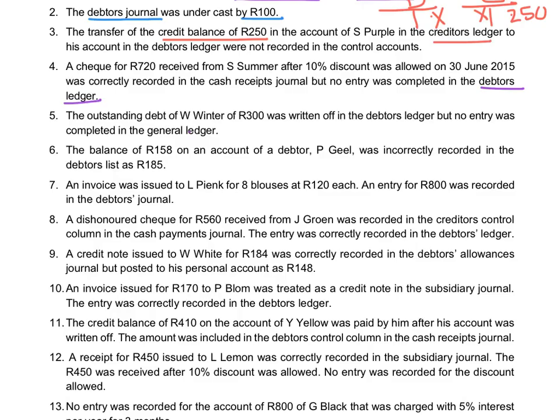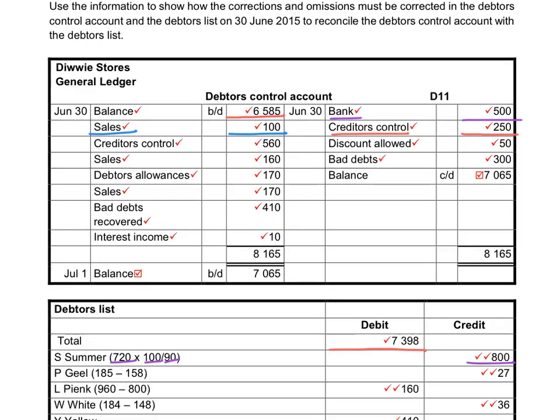The outstanding debt of W. Winter of 300 rand was written off in the debtors ledger, but no entry was completed in the general ledger. There is no mistake in the debtors ledger since that entry was already done there. We still have to complete it in the general ledger: the debtors control account will be credited with 300 rand to reduce the debt, and the bad debts account will be debited to increase the expense.